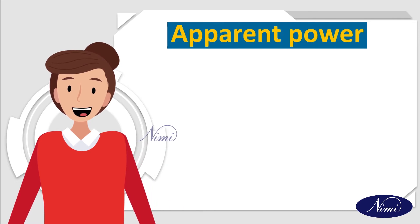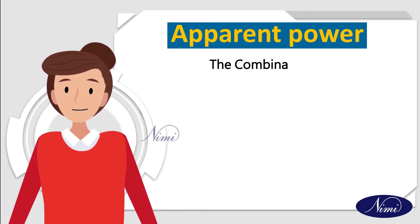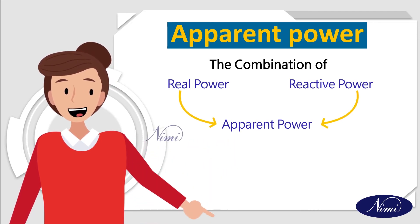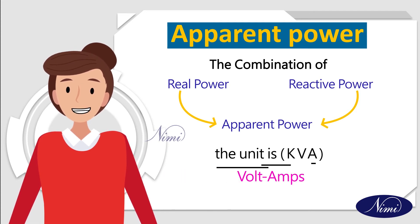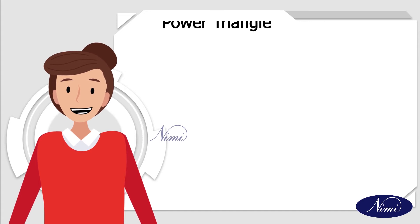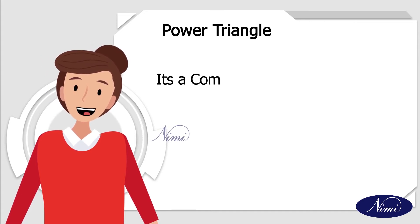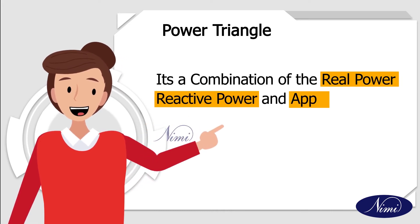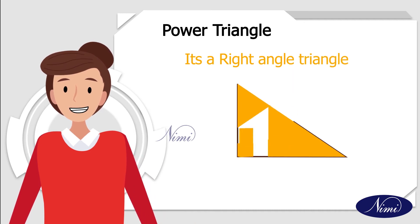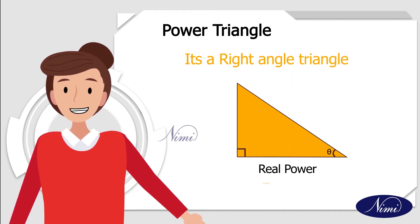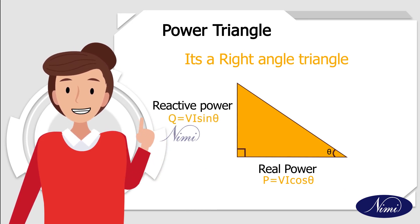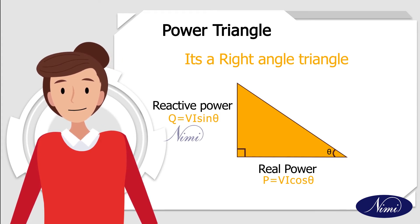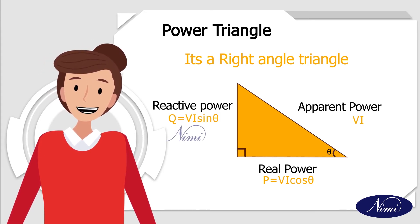Next is apparent power. The combination of real power and reactive power gives the apparent power. The unit of apparent power is KVA. Next is the power triangle — it is a right-angle triangle where real power and reactive power are the adjacent and opposite sides, and the hypotenuse represents the apparent power.